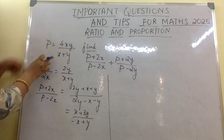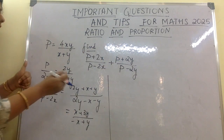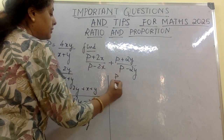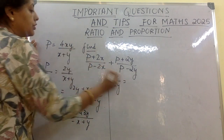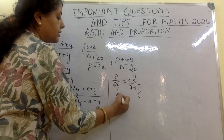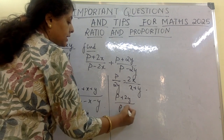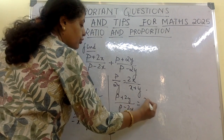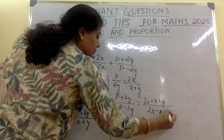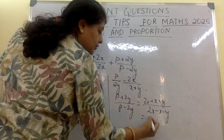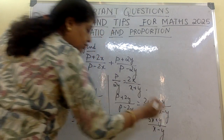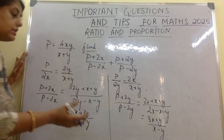Now I change the expression to get p/2y. From here p/2y = 2x/(x+y). Applying componendo and dividendo: (p + 2y)/(p − 2y) = (2x + x + y)/(2x − x − y), which equals (3x + y)/(x − y).